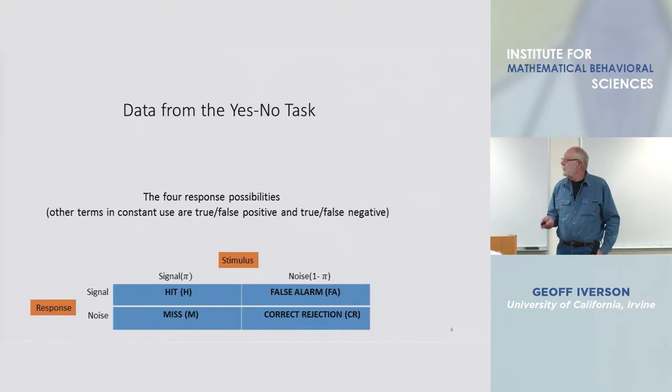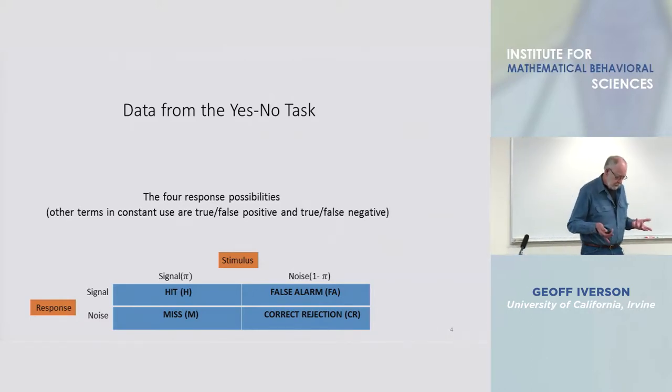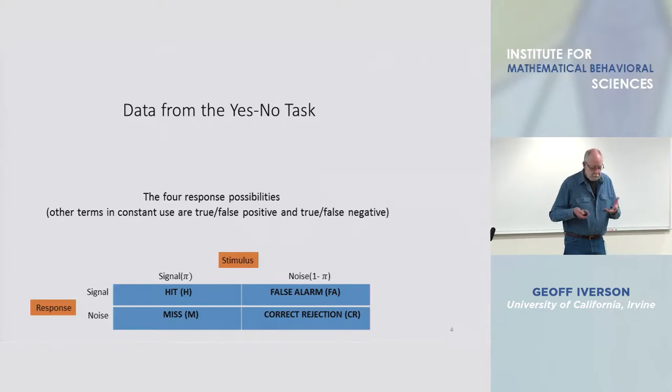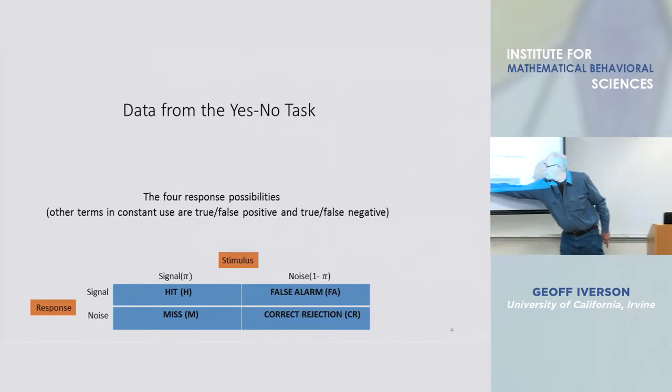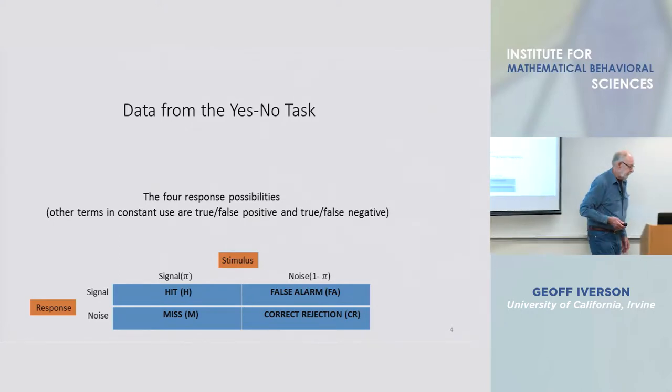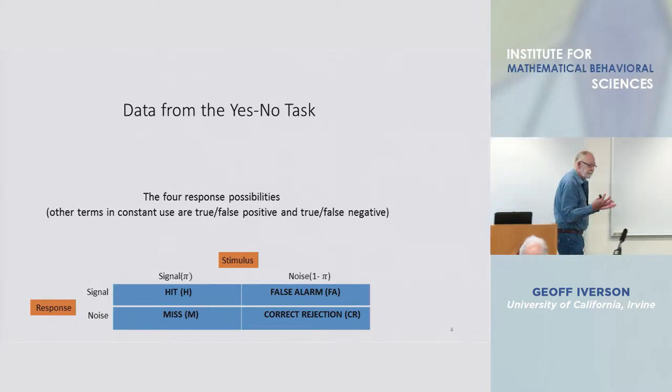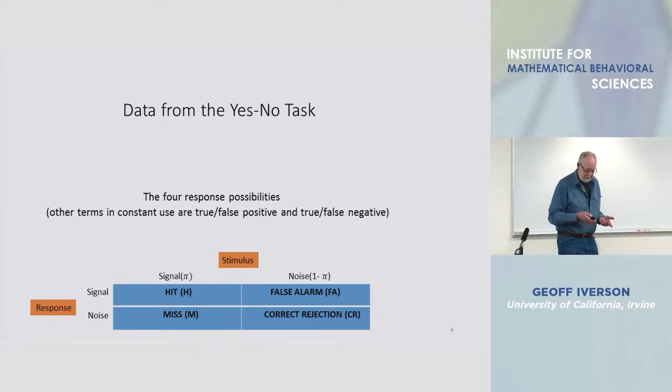The tradition in the field which comes from statistical classical statistical decision theory is to study the trade-off between hits and false alarms, and that trade-off is a function called a receiver operating characteristic.